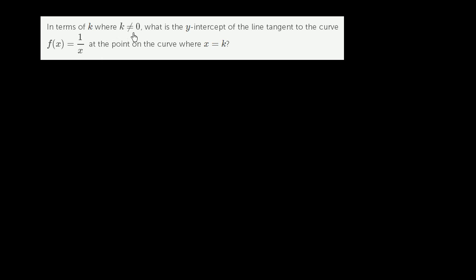In terms of k, where k does not equal 0, what is the y-intercept of the line tangent to the curve f of x equals 1 over x, at the point of the curve where x is equal to k?